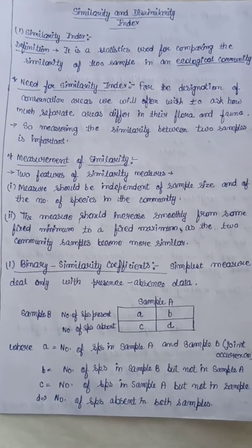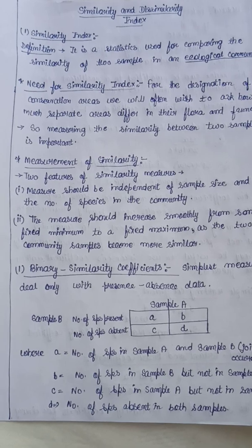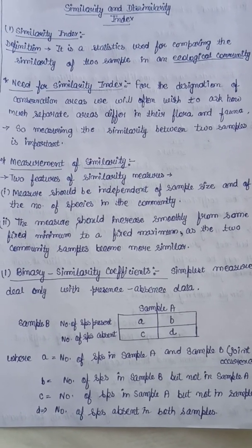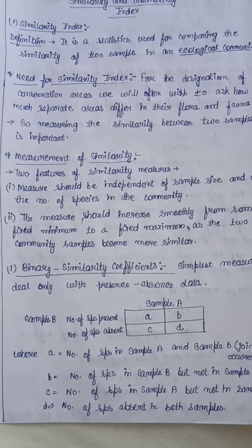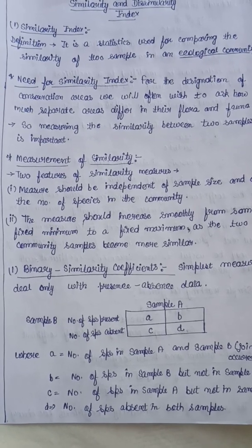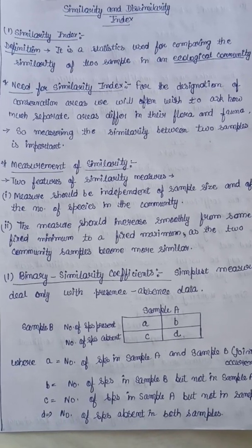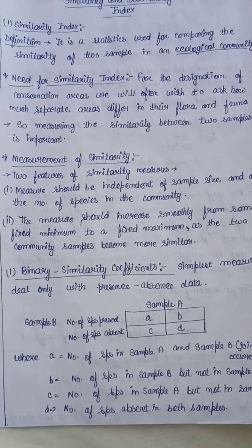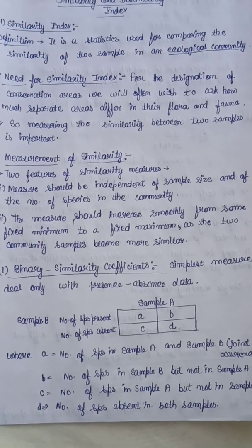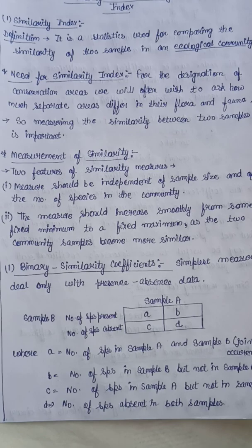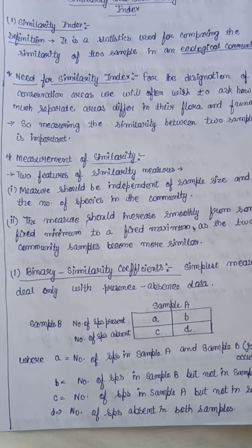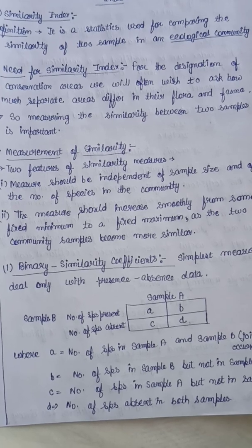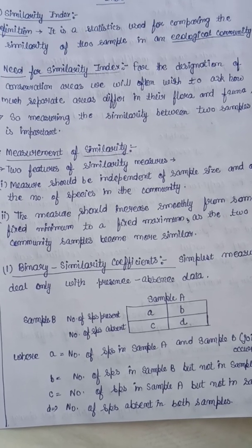What is the need for a similarity index? For the designation of conservation areas, we often wish to ask how much separate areas differ in their flora and fauna. Measuring the similarity between two samples is important so we can understand what species should have what sort of existence — that is, in which conservation category they should be placed.